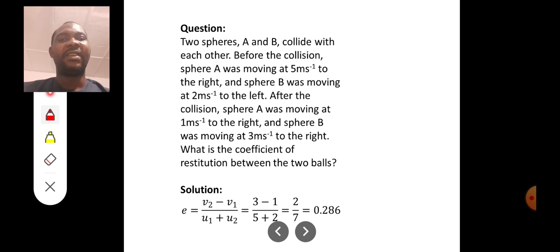Very simple. After collision, their relative velocities move in the same direction, you subtract. That means 3 minus 1.